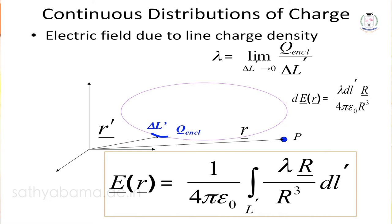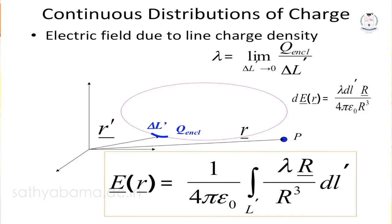For line charge density, consider a straight conductor where charge is spread along the length. Line charge density lambda λ equals Q by L, with unit Coulomb per meter. The elemental electric field intensity dE equals λ dL r̂ / (4πε r³). To find the electric field intensity for the entire length of the conductor, we perform a line integral.